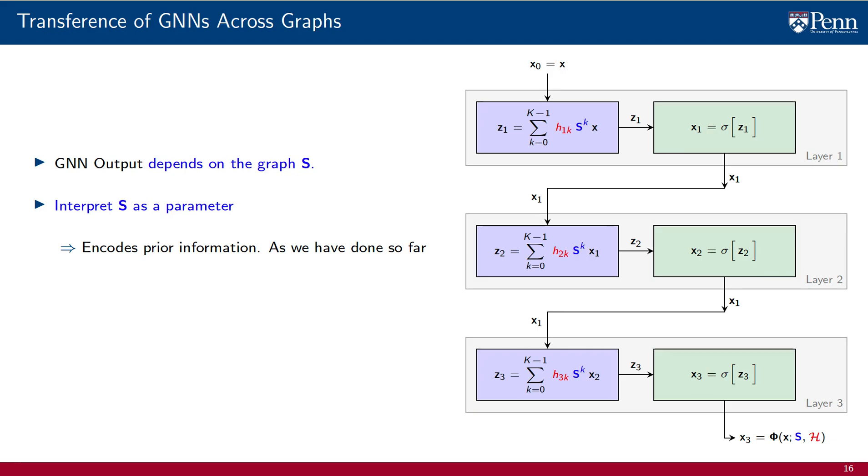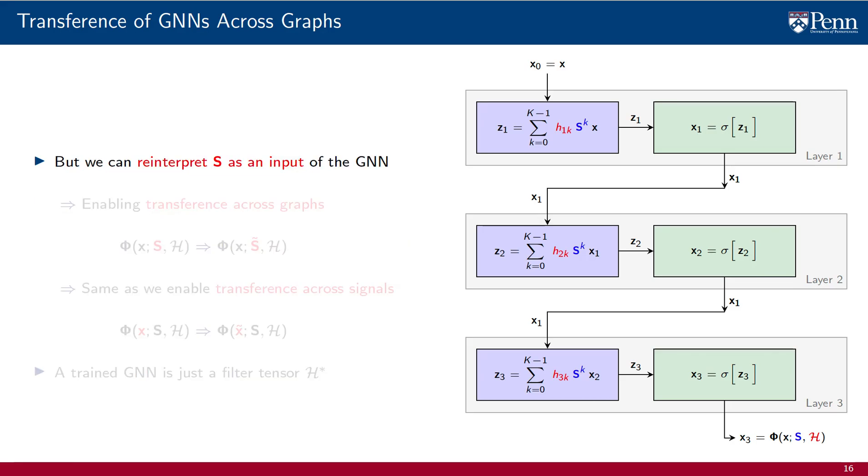This is the perspective we have emphasized so far. We have thought of S as a way of encoding prior information about our signals of interest. But nothing prevents us from reinterpreting S as an input to the GNN. This interpretation enables transference across different graphs.